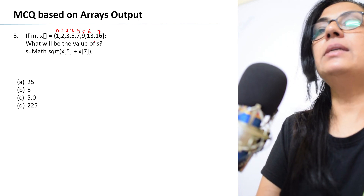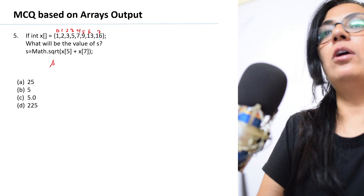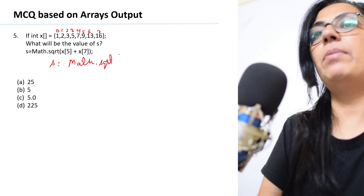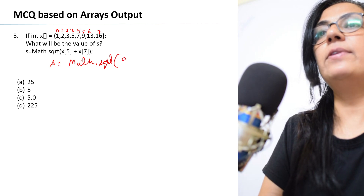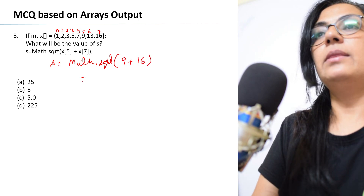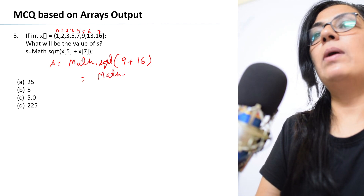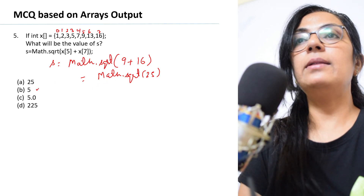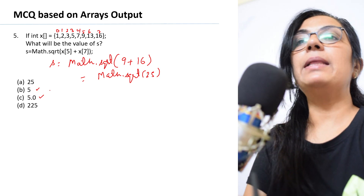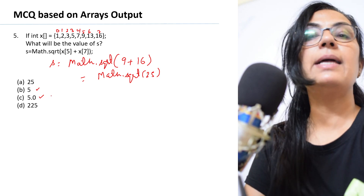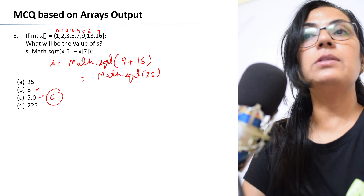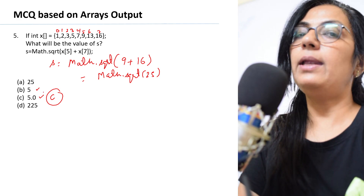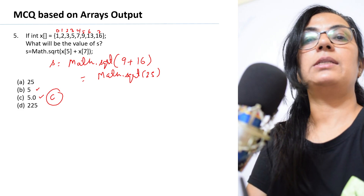Question 5: int x[] = {1,2,3,5,7,9,13,16}. s = Math.sqrt(x[5] + x[7]). x[5] = 9, x[7] = 16, so Math.sqrt(9+16) = Math.sqrt(25). The square root of 25 is 5, but Math.sqrt always returns a double type, so the answer is 5.0. Option C is the correct answer — don't get confused.